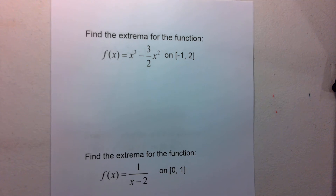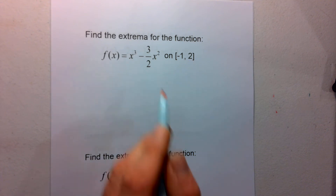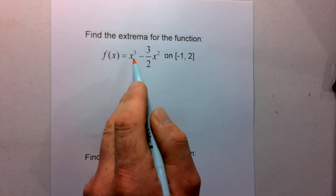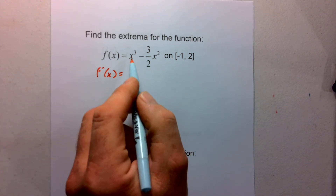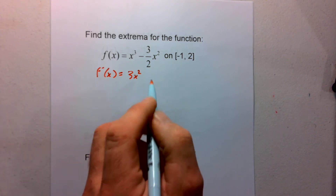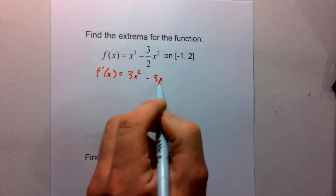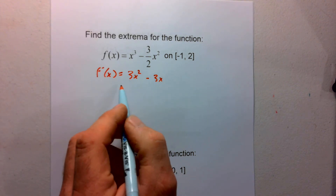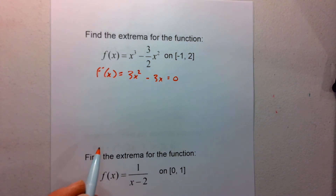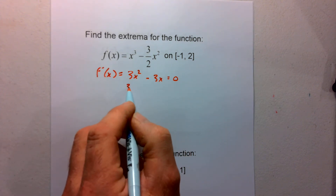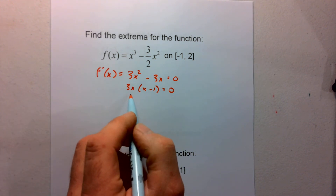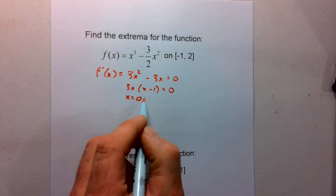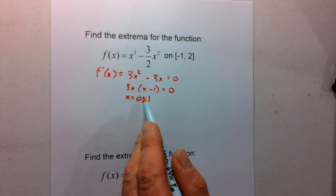For our first extrema example, we have x³ minus (3/2)x² on the interval from negative 1 to 2. The first thing I'm going to do is find my critical points, which come from when the derivative is equal to zero. Finding the first derivative, we get 3x² minus 3x. Setting that equal to zero, I can factor out 3x to get 3x(x minus 1) equals zero. Setting each factor equal to zero, I get x equals 0 and x equals 1 — two critical values.